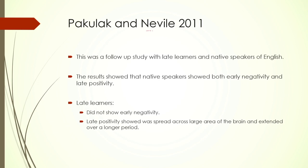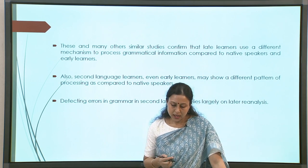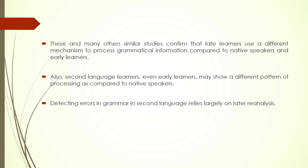Another well-known study with late learners and native speakers of English showed that native speakers showed both early negativity and late positivity, as expected. Late learners did not show early negativity — N200 was missing — and the late positivity was spread across a large area of the brain and extended over a longer period. We see a difference between native speakers versus late bilinguals, as well as the earlier finding of early versus late bilingual differences. Many similar studies confirm that late learners use a very different mechanism to process grammatical information compared to native speakers and early learners, with a strong similarity between early bilinguals and native speakers.